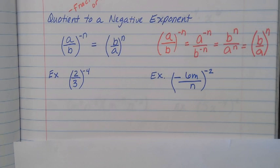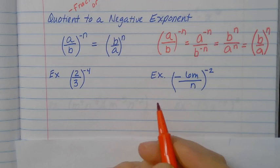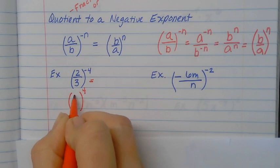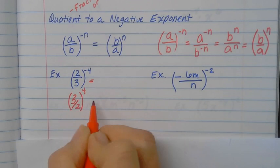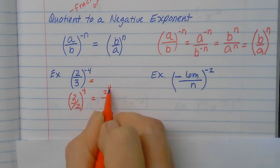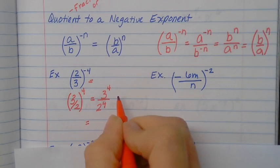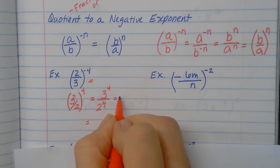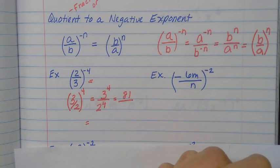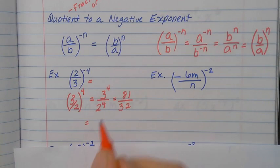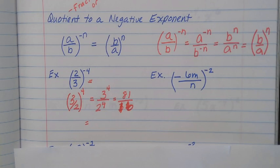Okay let's look at this together. Here I have a negative four as an exponent, so I'm going to change it to positive and do the reciprocal inside — flip the two-thirds to three over two. Then I distribute the four in: three to the fourth and two to the fourth. Three to the fourth is 3×3=9, ×3=27, ×3=81. Two to the fourth is 2×2=4, ×2=8, ×2=16. So the answer is 81 over 16, which cannot be reduced.